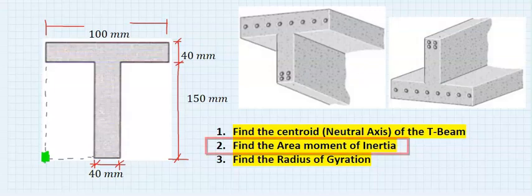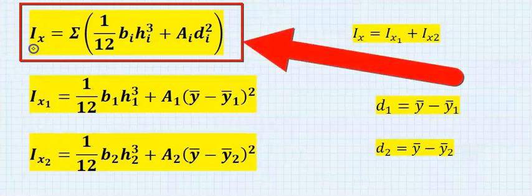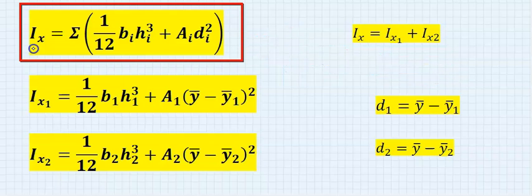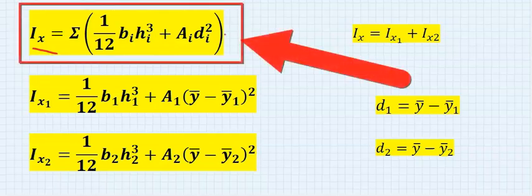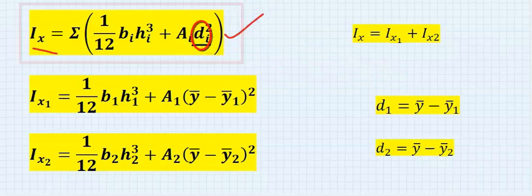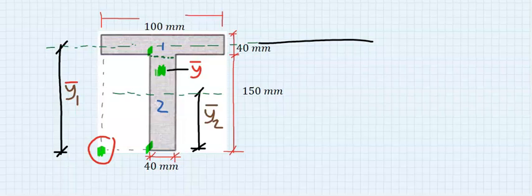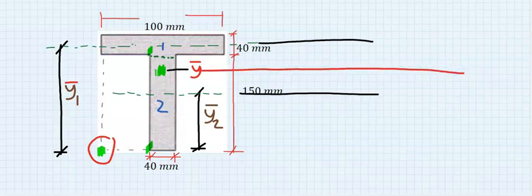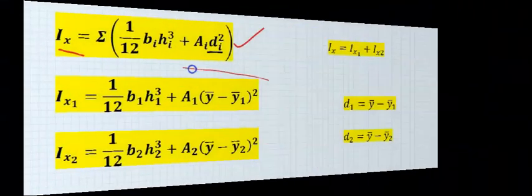Next, let's find the area moment of inertia. Step number one: write out the formula for the area moment of inertia along the x-axis using the parallel axis theorem. Here, d is the distance from the total centroid to the centroid of each rectangle. So d1 is the distance from the total centroid to the centroid of rectangle one, and d2 is the distance to the centroid of rectangle two.